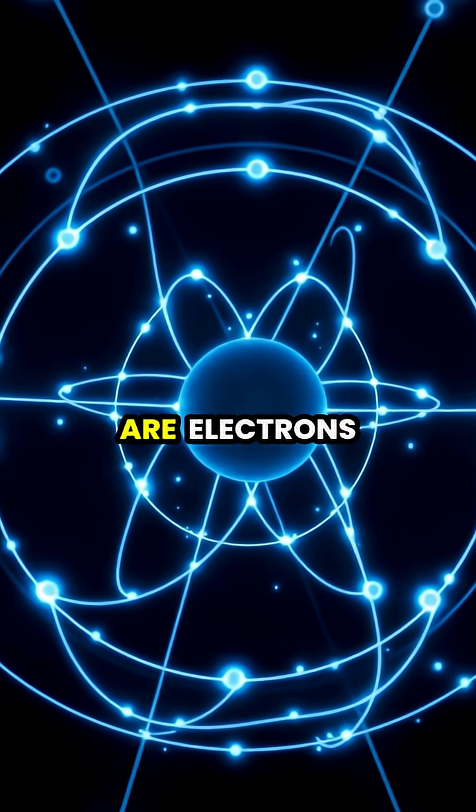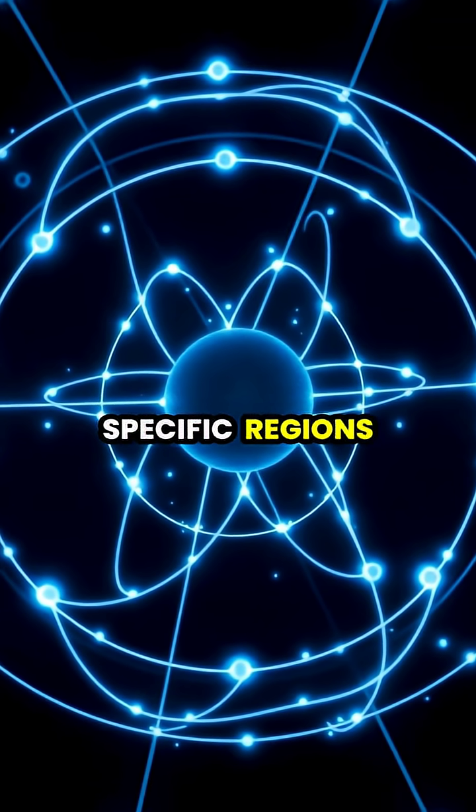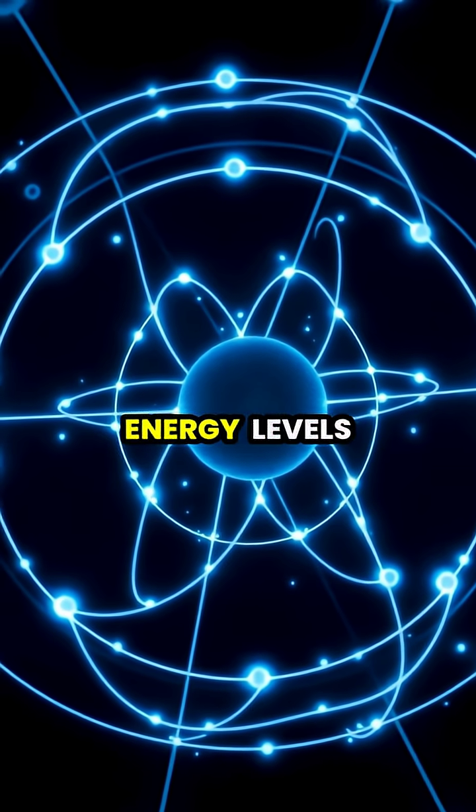Orbiting around the nucleus are electrons, negatively charged particles that move in specific regions called electron shells or energy levels.